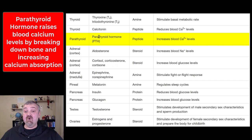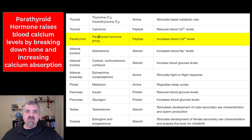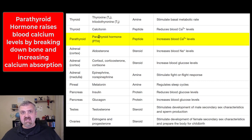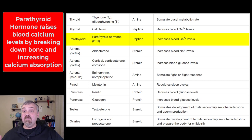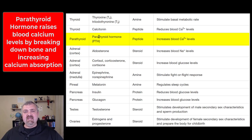The parathyroid gland produces parathyroid hormone, which does the opposite of calcitonin. Its job is to keep blood calcium levels up. It does so by increasing calcium absorption in the gut, increasing reabsorption in the kidneys, and also stimulating osteoclasts — the cells that break down bone — to release calcium into the blood. Parathyroid hormone keeps blood calcium levels up, whereas calcitonin keeps them down. Parathyroid hormone is also related to a hormone called calcitriol, which comes from the kidneys — we'll cover that with secondary hormones.